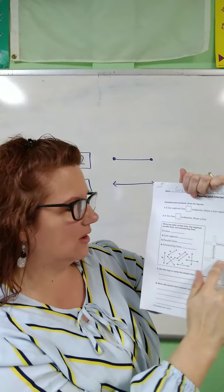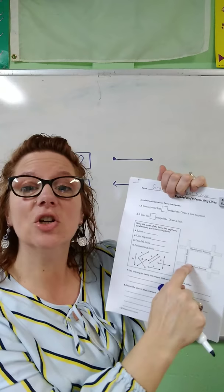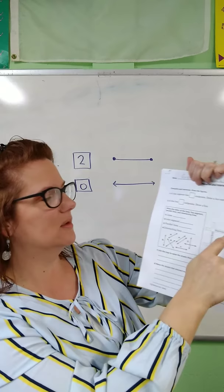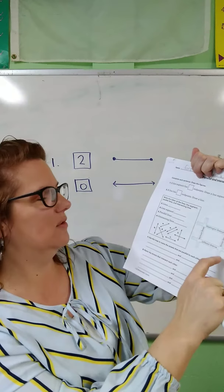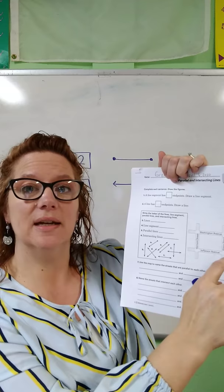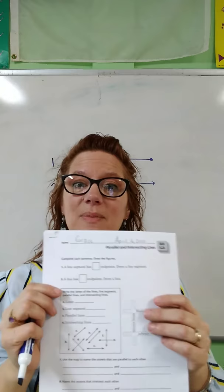Number eight says name the streets that intersect each other. If you look closely, Grace, we can see streets crossing each other at four different intersections. Vermont crosses Washington, Vermont crosses Jefferson, Illinois crosses Washington, and Illinois crosses Jefferson. So those are the answers for the bottom of the page.